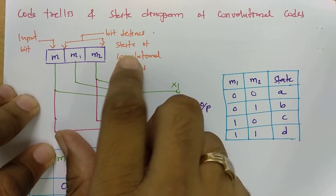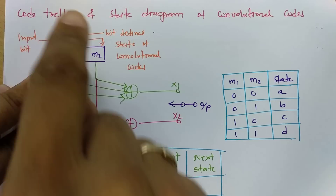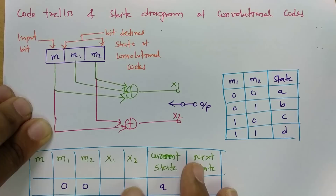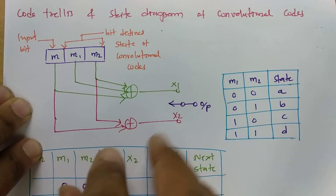Welcome to the digital communication playlist. In this session, I will explain code trellis and state diagram of convolution code, and I will explain this by one example so it will be more clear how to draw code trellis and state diagram for any convolution code. So let us begin this session.